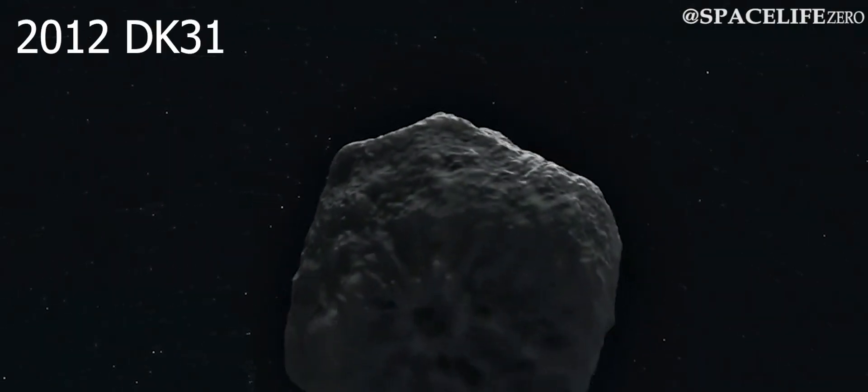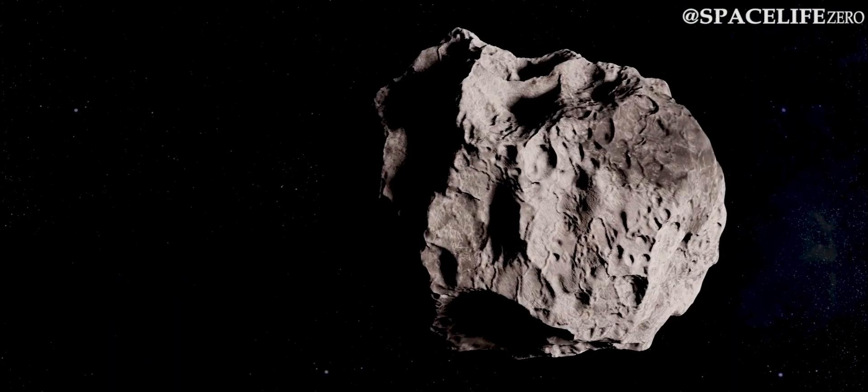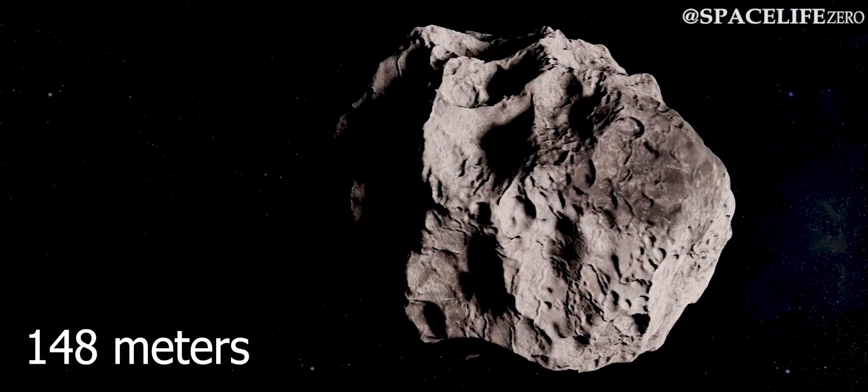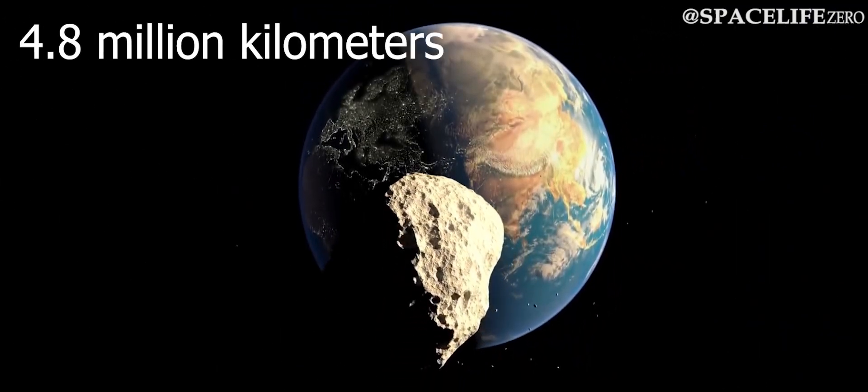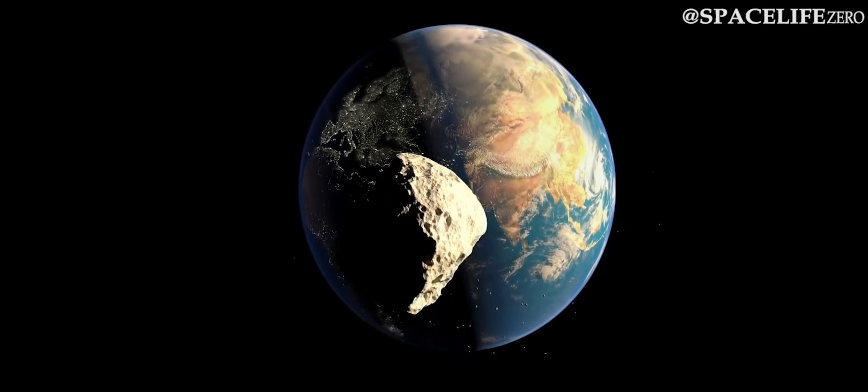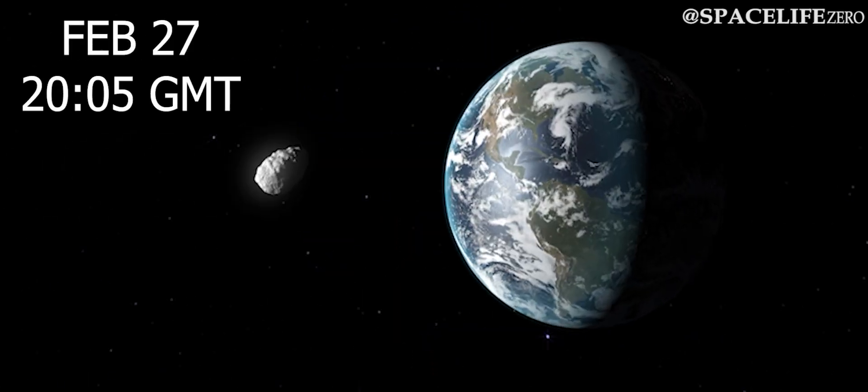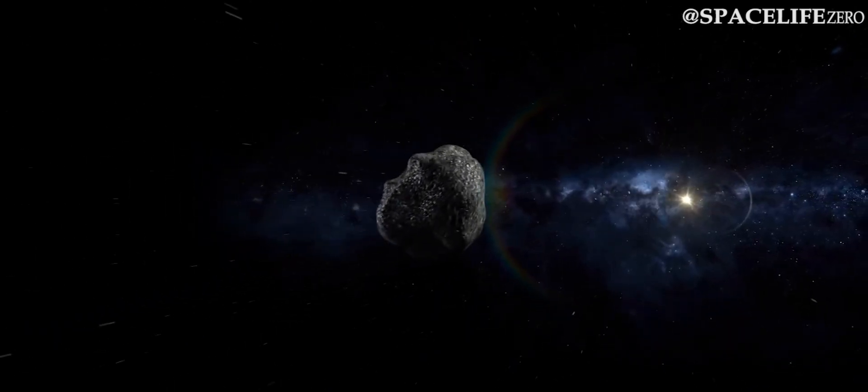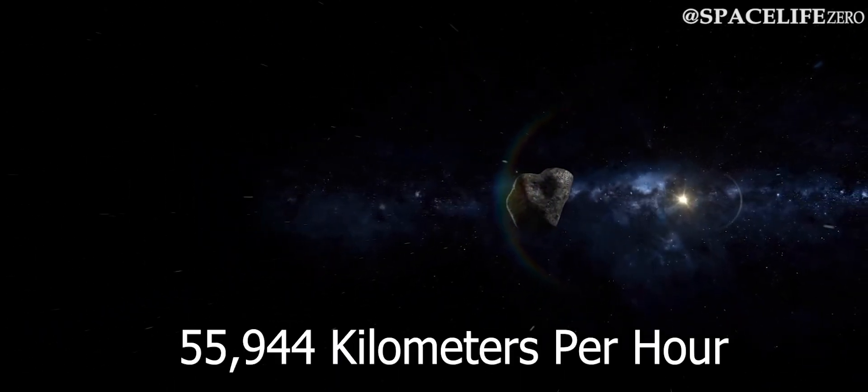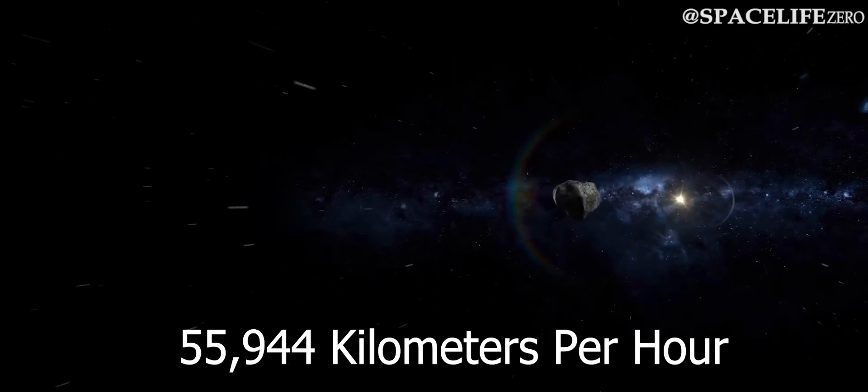Asteroid 2012 DK31. This huge asteroid is 148-meters wide. It will be making its closest approach to Earth at a distance of 4.8 million kilometers on February 27, at 2005 GMT. The speed of the asteroid as tracked by NASA is 55,944 km per hour.